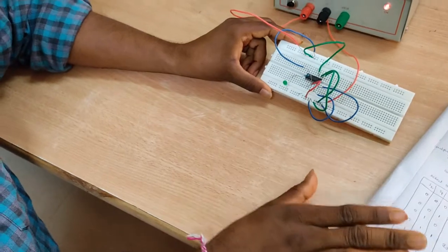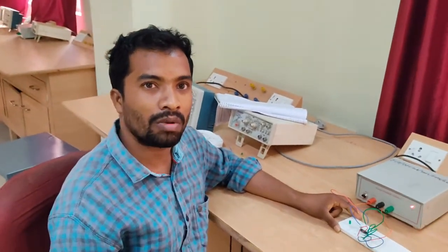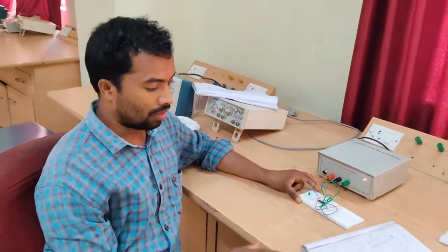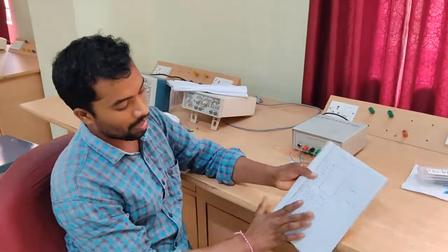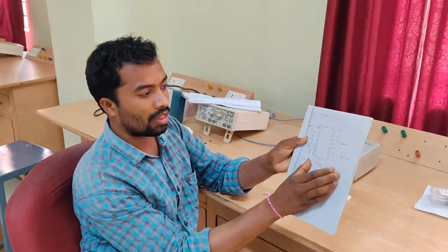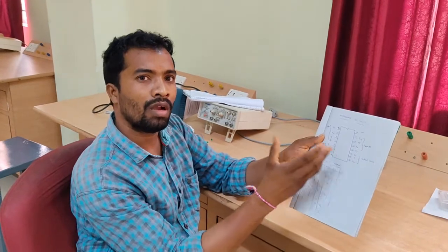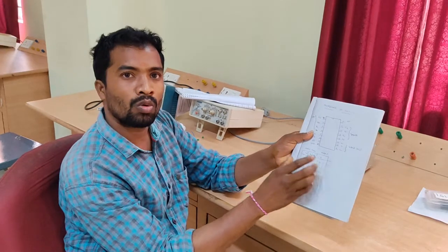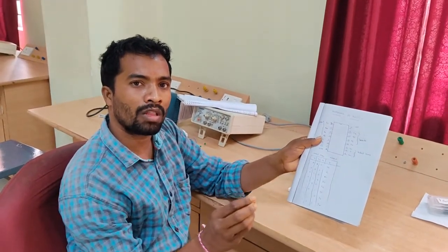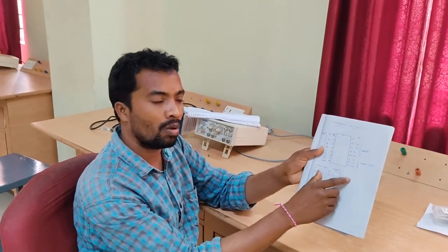So this is the 8x1 multiplexer. Actually, there's 2x1 multiplexer, 4x1 multiplexer, and 8x1 multiplexer. This is the IC number 74151 multiplexer IC. So by using this multiplexer IC, we can do the 2x1, 4x1 and 8x1. But actually in our lab, 2x1 multiplexer and 4x1 multiplexer are done by using logic gates and 8x1 multiplexer by using direct IC.